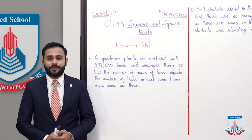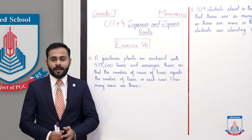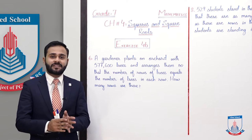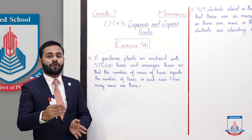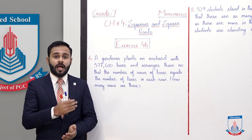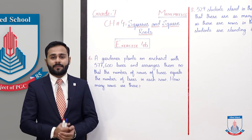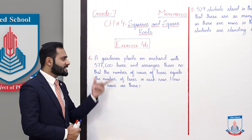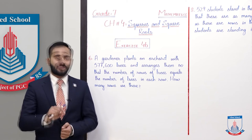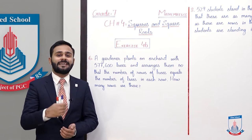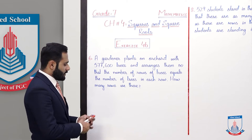How many rows are there? A gardener has trees to plant in an orchard, and in each row the number of rows equals the number of trees per row. That means we have to find the square root to calculate the number of rows.